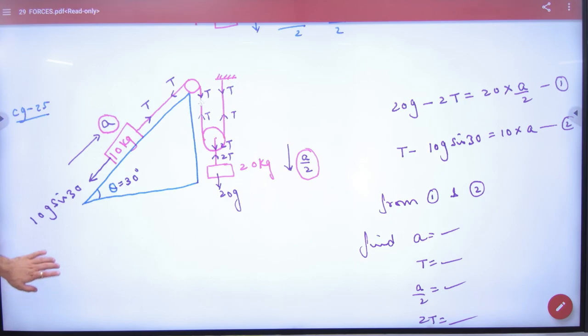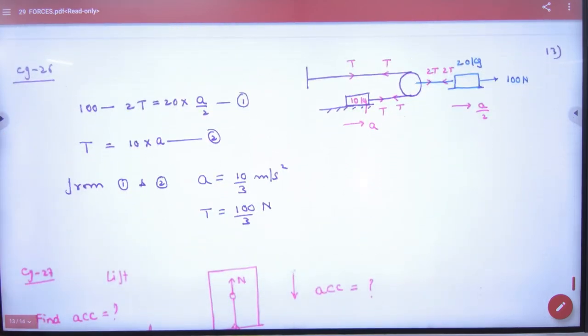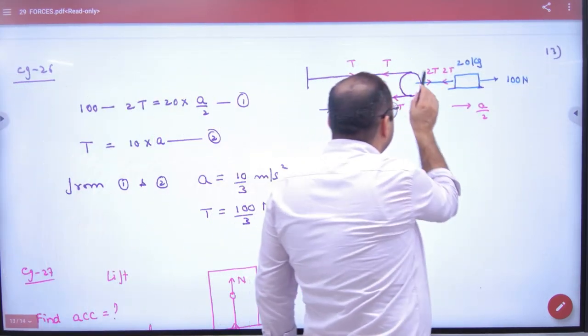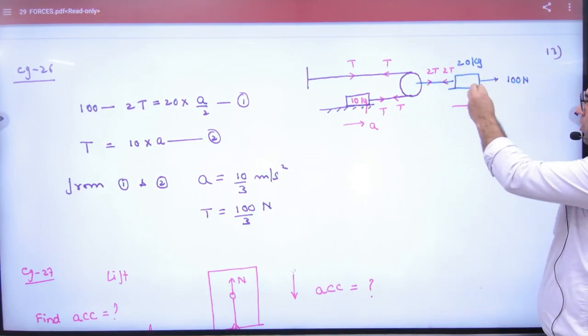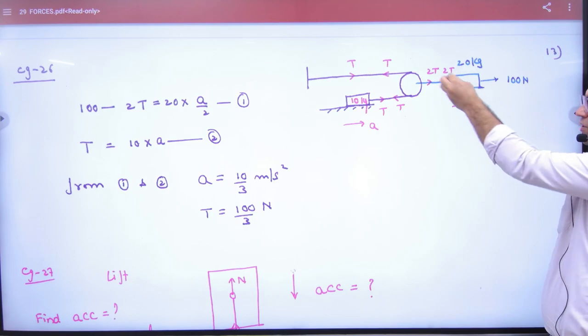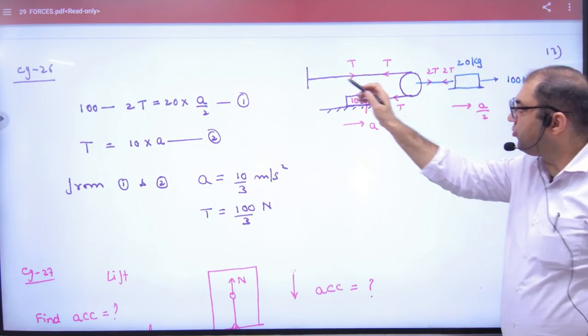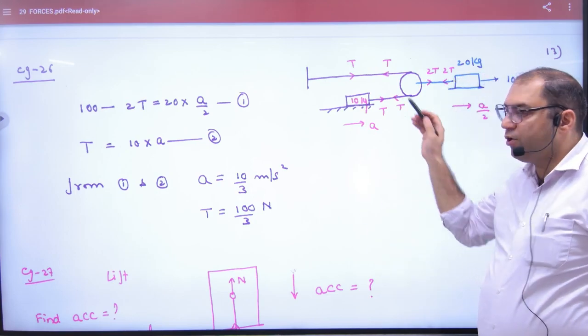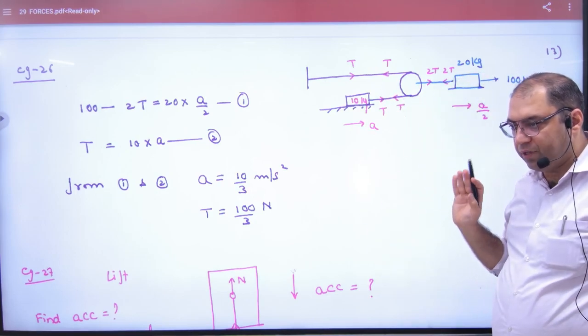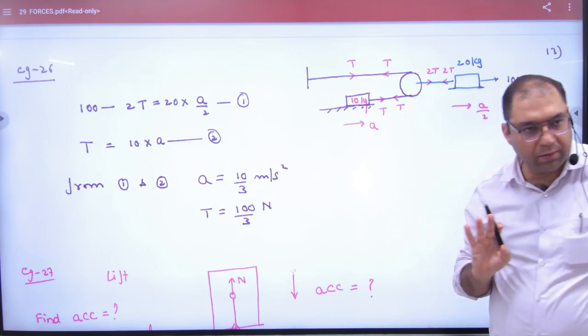Rest is the same. Just the acceleration concept. Like your question - in this question, there is C here and force here. This block and here also a string, this block and here also a string and force here. Find acceleration and tension. String is one, so tension value is same at T and T. Here tension value, here it will become double - T is there so 2T 2T. This is also clear.